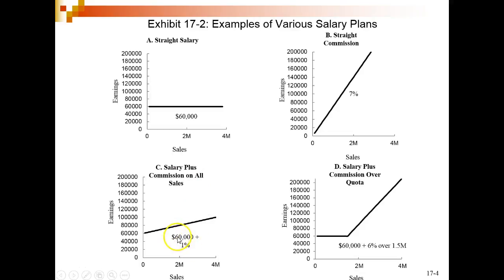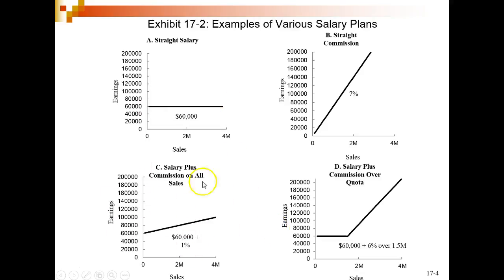Salary plus commission on sales — sixty thousand dollars plus one percent, compared to seven percent on straight commission. You get the sixty thousand, your mortgage is covered, and here's the incentive: you want to sell more, you make more. This is by far the most popular approach because we don't want salespeople so desperate that they commit fraud, but we still incentivize them. It's a solid way to do things.